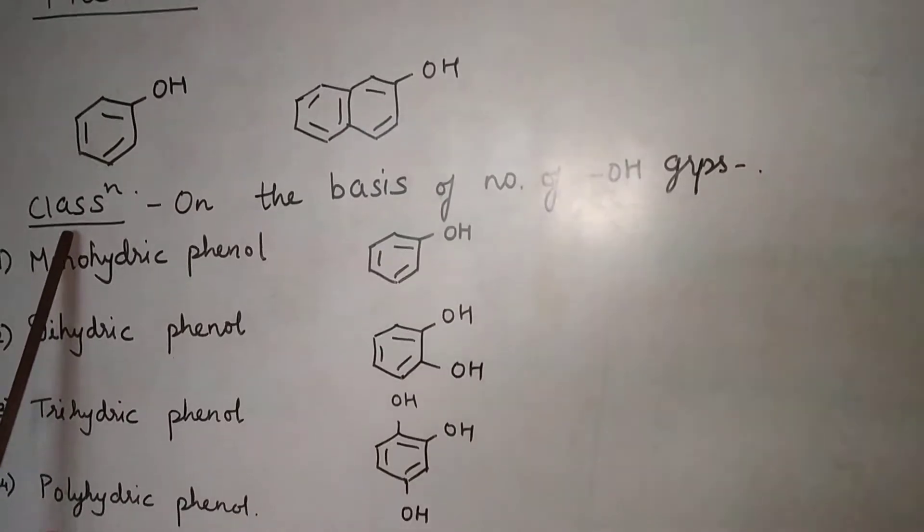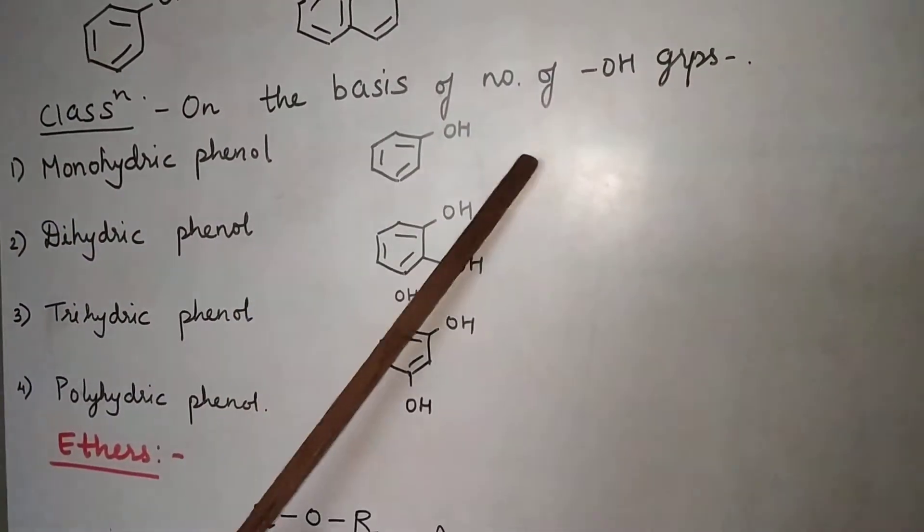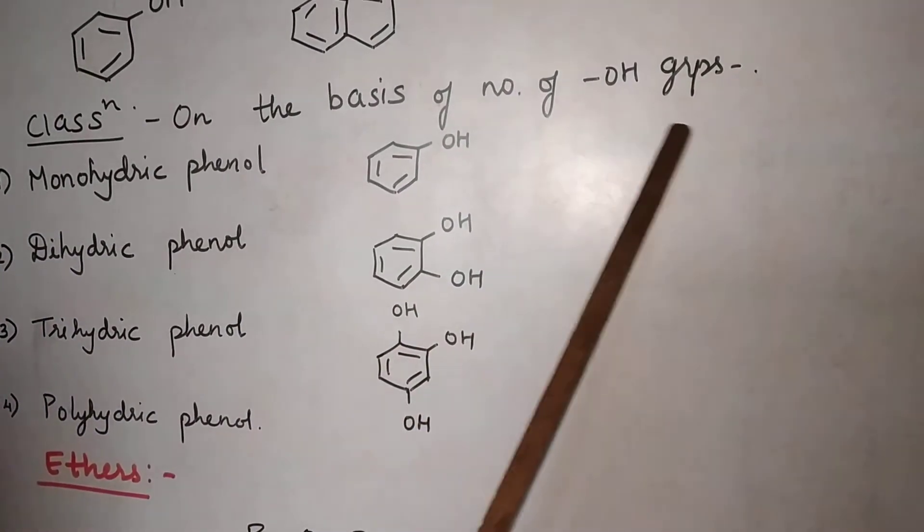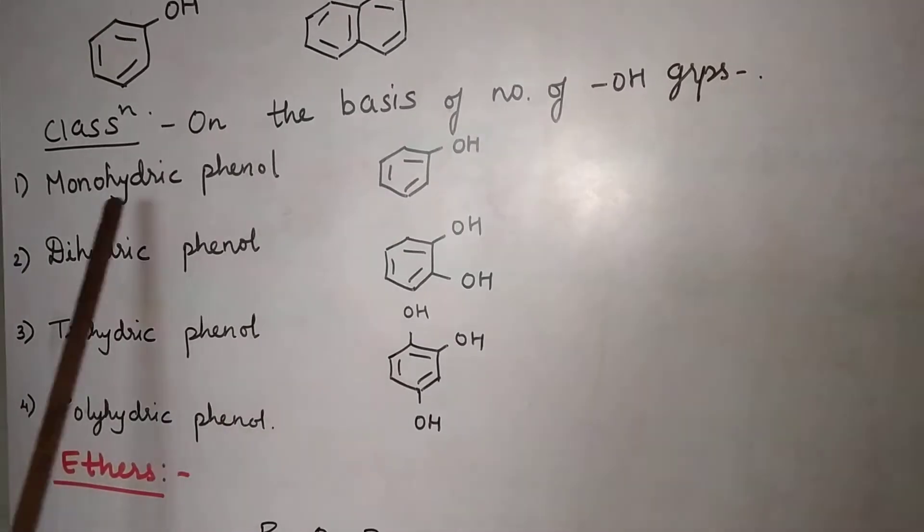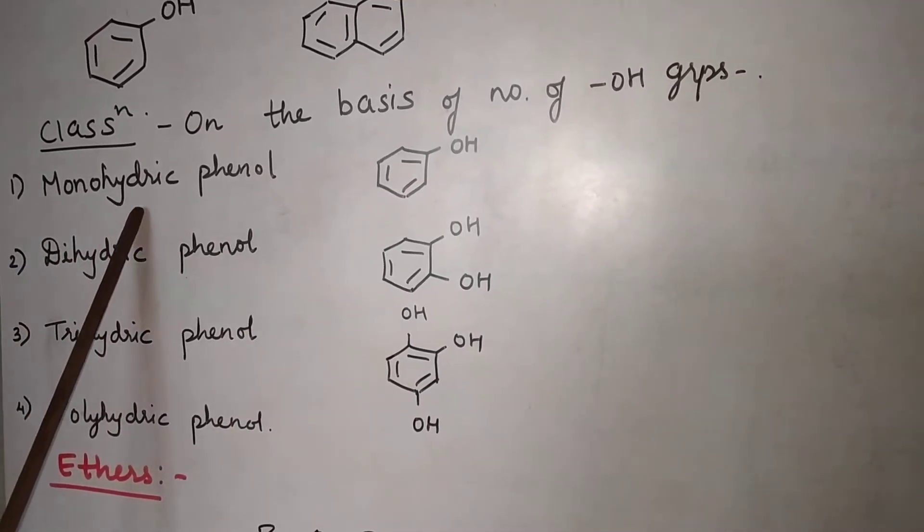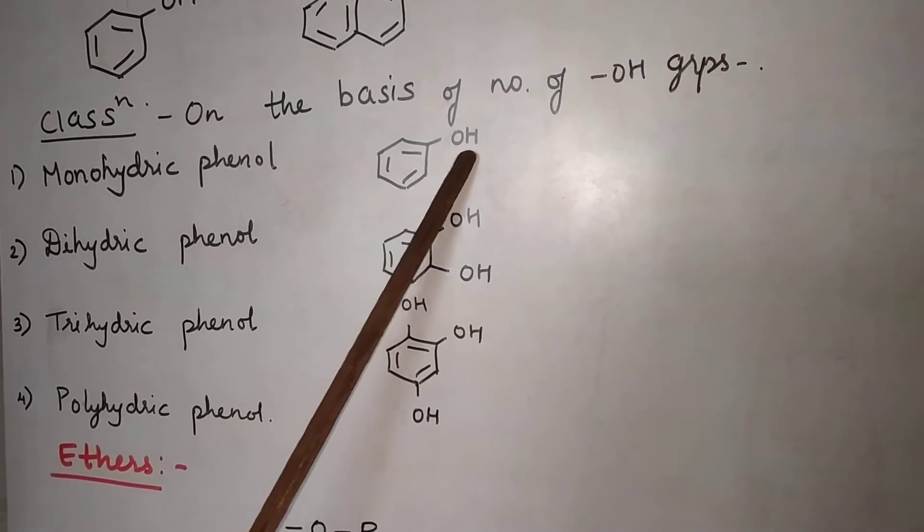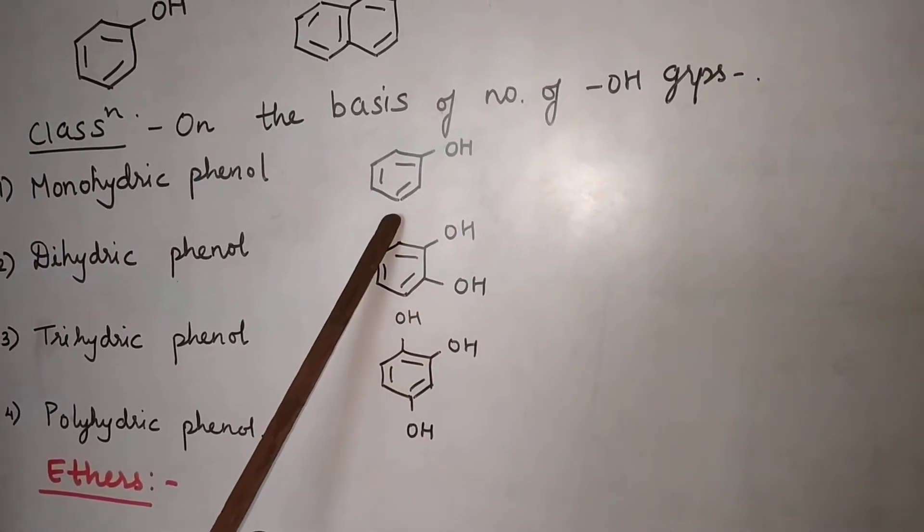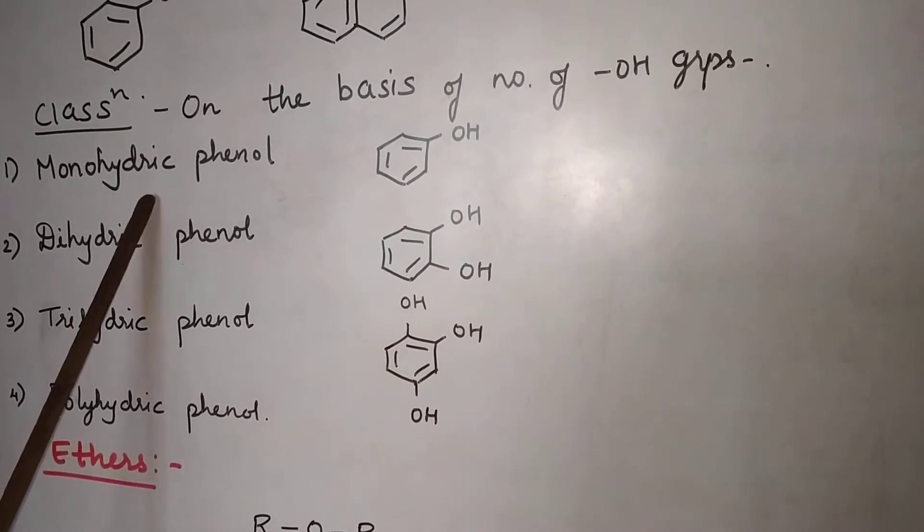Now how is the classification done? Classification is on the basis of number of OH groups present, just like alcohols. We classify phenols as monohydric phenols. The phenols that contain only one OH group directly attached to benzene ring.